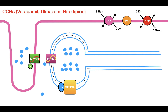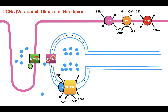We also have the PMCA, or plasma membrane calcium ATPase. This uses the energy released by ATP hydrolysis in order to pump calcium out of the cell and hydrogen ions into the cell. The most important way in which calcium is removed from the cytosol is through the SERCA pump. The SERCA uses ATP to pump calcium back into the sarcoplasmic reticulum through hydrolysis of ATP.